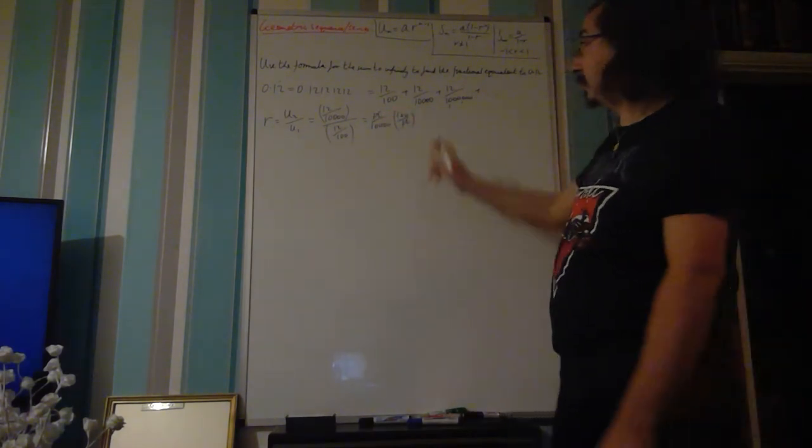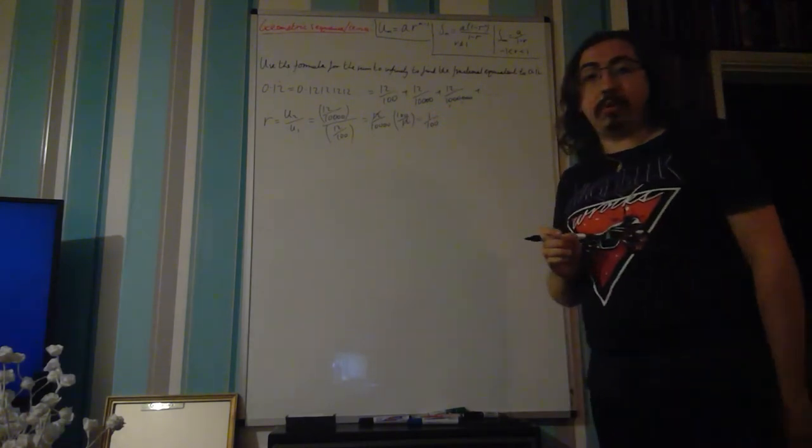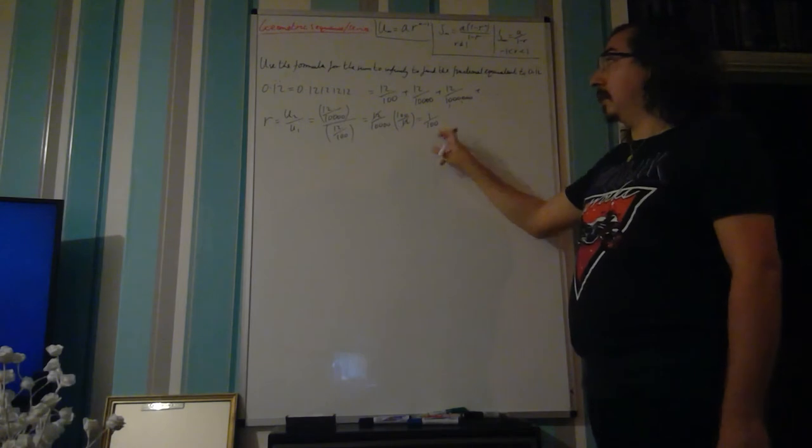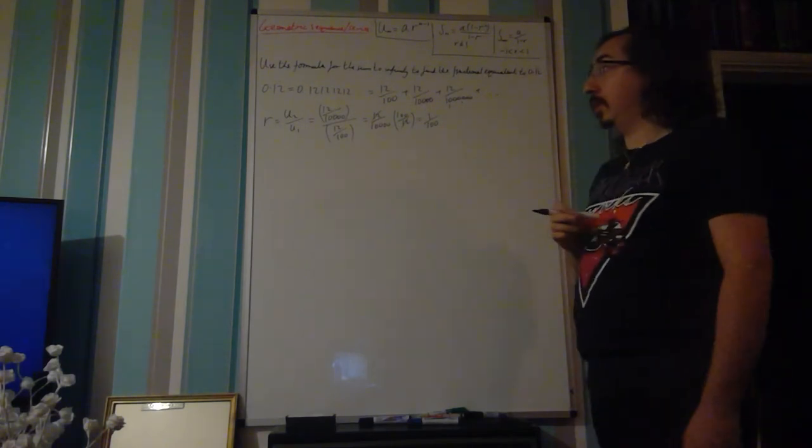The 12's cancel, the 100 and the 10,000 simplify, so you have 1 over 100. And that's actually our common ratio r for this recurring decimal.